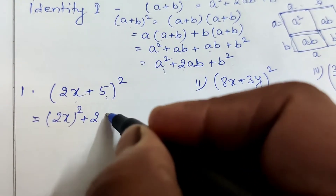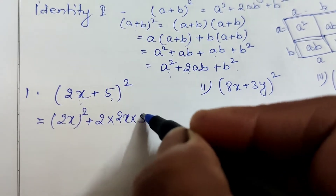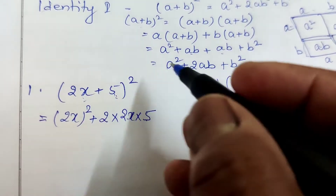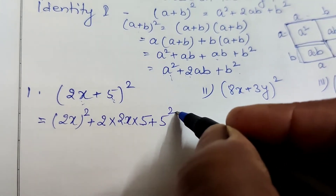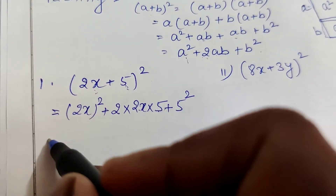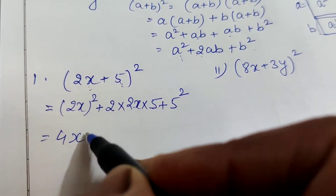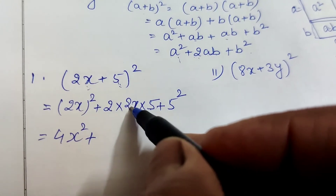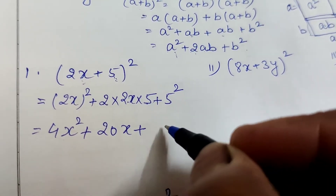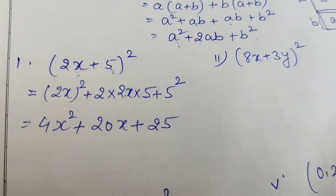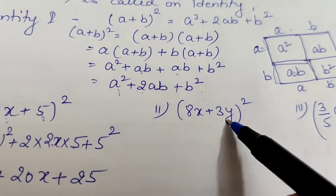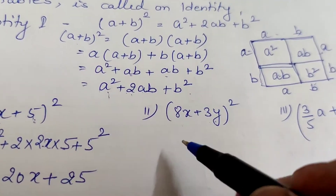First we square the first number, then add twice the product of the two numbers (2ab means first number times second number), then add the square of the second number. The square of 2x is 4x², the product 2 × 2 × 5 gives 20x, and 5² is 25. So (2x + 5)² = 4x² + 20x + 25.